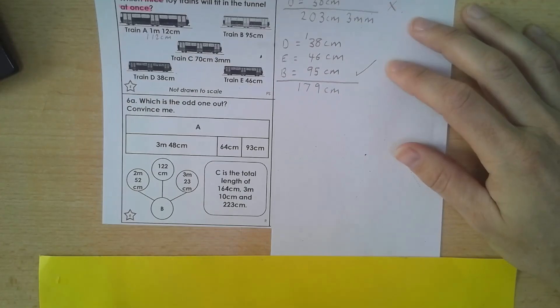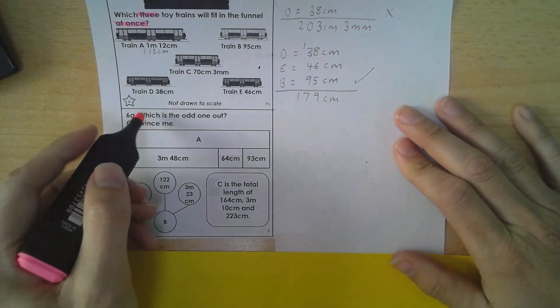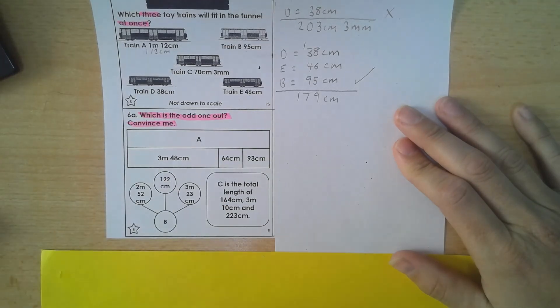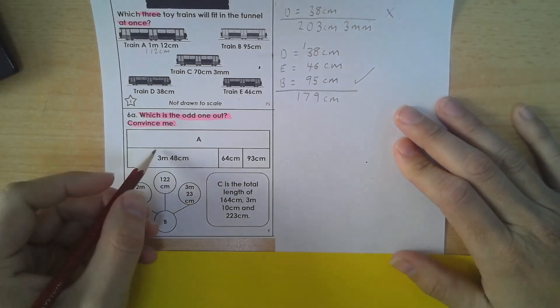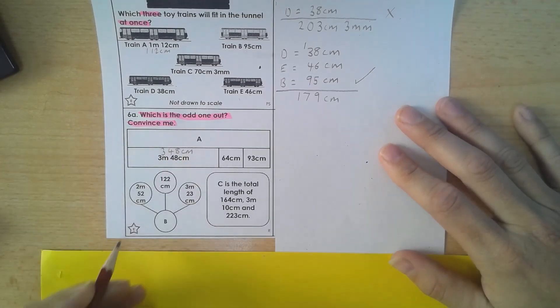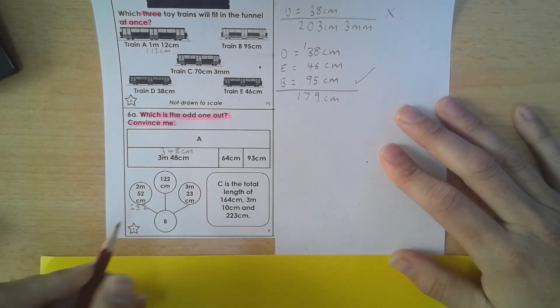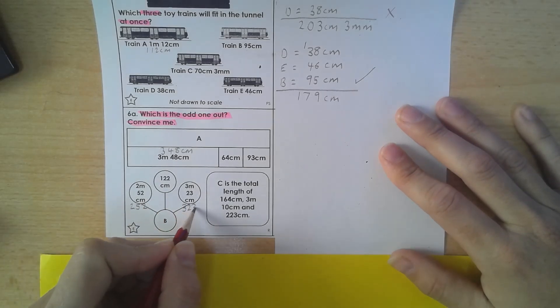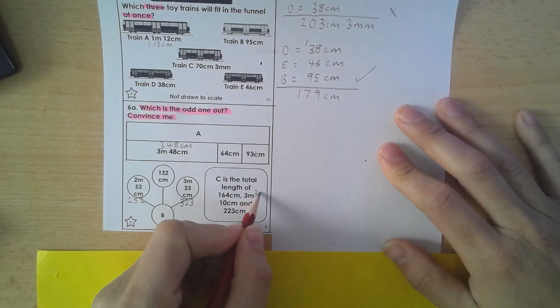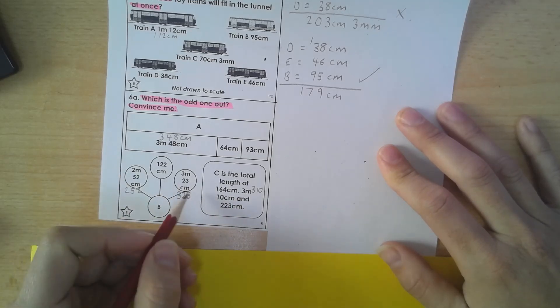And finally, 6, or number 3 on the sheet, which is the odd one out and convince me. Okay. First thing I've noticed is the mix. So I'm going to get them all the same unit of measurement. And we've got, so that one's going to be 252 centimetres. This one's going to be 323 centimetres. And we've got 310 in there. So I've converted from the metres to the centimetres.